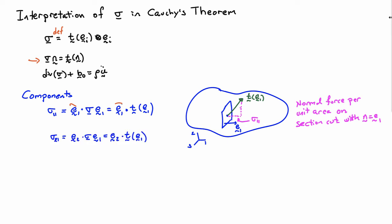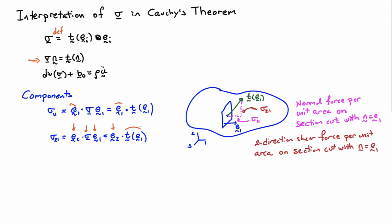Looking at the 2,1 component: to get it, I apply sigma to E1 and then take its dot product with E2. That is E2 dotted with the traction on that surface — the vertical part of the projection. So sigma 2,1 is the two-direction shear force per unit area on the section cut with normal E1. That is what we consider the shear force in the two direction on that surface.